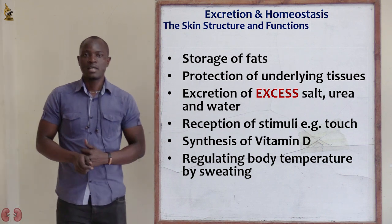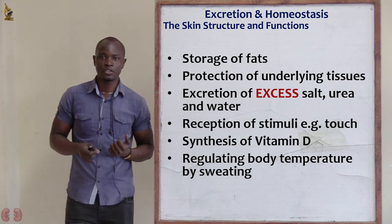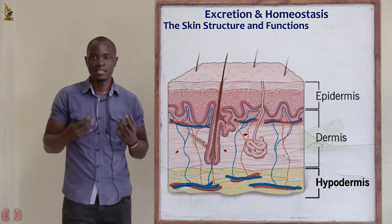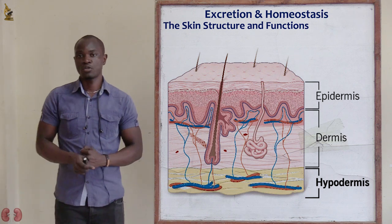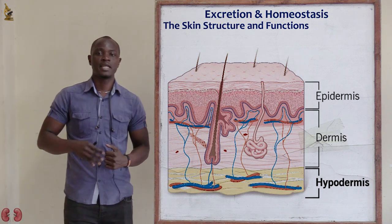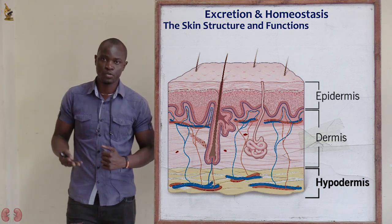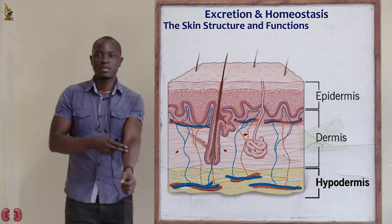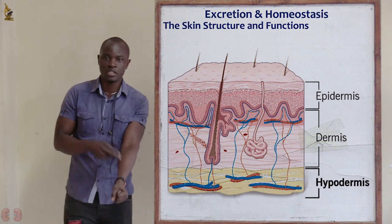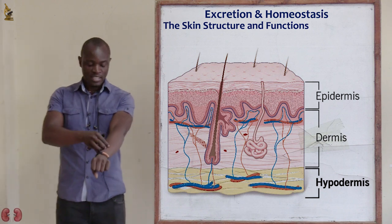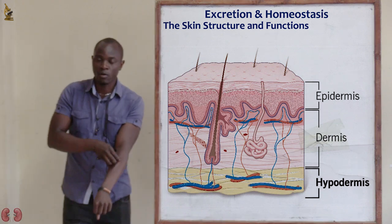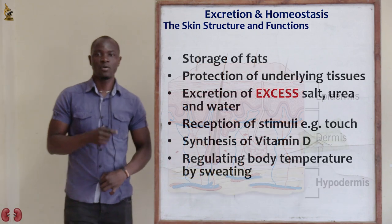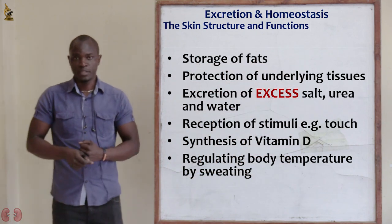Another function of the skin is that it serves as a protection medium for all the underlying tissues and cells of the body. Inside the skin we have different organs, tissues, and cells. So if I scratch myself, I am scratching the skin and not the organs. It serves as a protection medium for all the underlying tissues of the body.